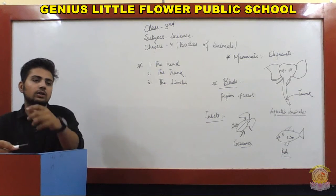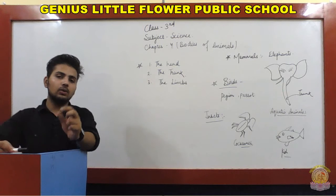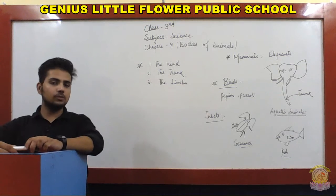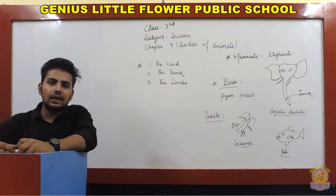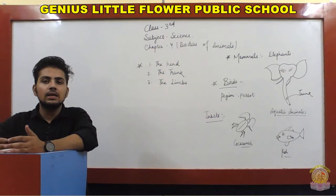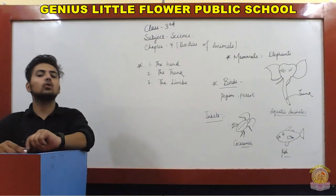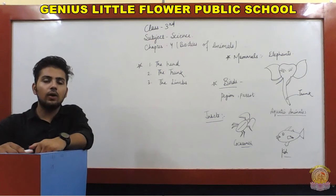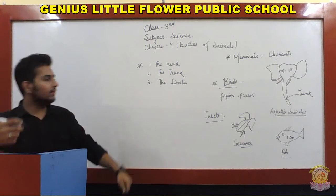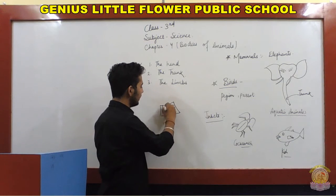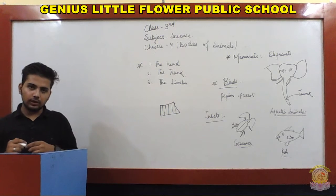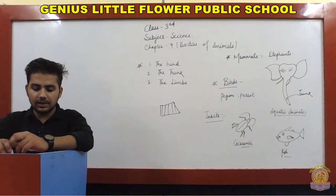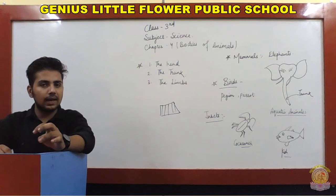Birds have a head with eyes and ears. Next is the trunk — that is the body, not like the elephant's trunk. Then there are wings, and birds also have two legs and a tail. The tail is of a very short type.